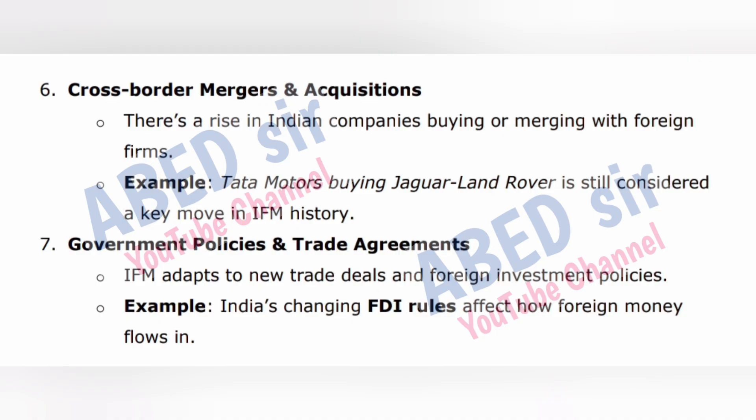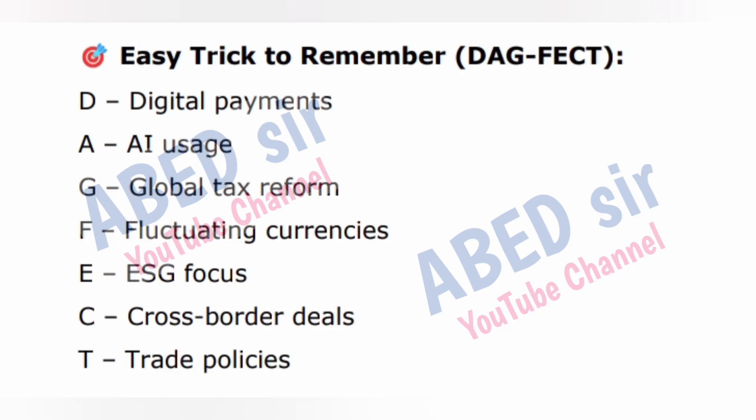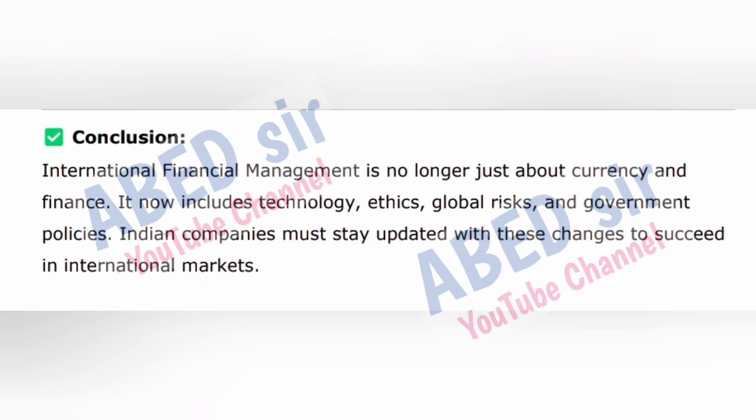7. Government policies and trade agreements — IFM adapts to new trade deals and foreign investment policies. Example: India's changing FDI rules affect how foreign money flows in. Easy trick to remember: DAG-FECT — D: Digital payments, A: AI usage, G: Global tax reform, F: Fluctuating currencies, E: ESG focus, C: Cross-border deals, T: Trade policies. Conclusion: International financial management is no longer just about currency and finance; it now includes technology, ethics, global risks, and government policies. Indian companies must stay updated with these changes to succeed in international markets.